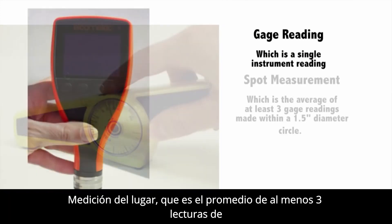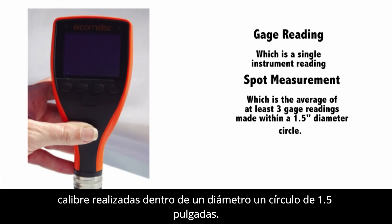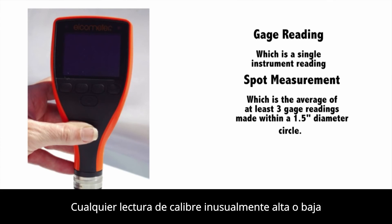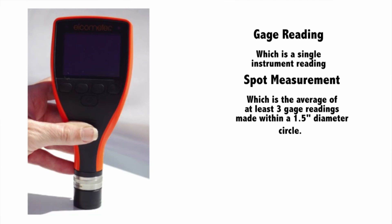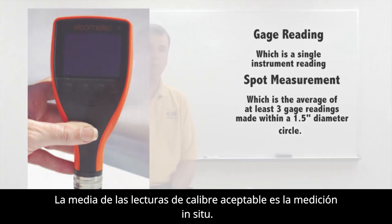The second definition is spot measurement, which is the average of at least three gauge readings made within a one and a half inch diameter circle. Acquisition of more than three gauge readings within a spot is permitted. Any unusual high or low gauge readings that are not repeated consistently are discarded. The average of the acceptable gauge readings is a spot measurement.